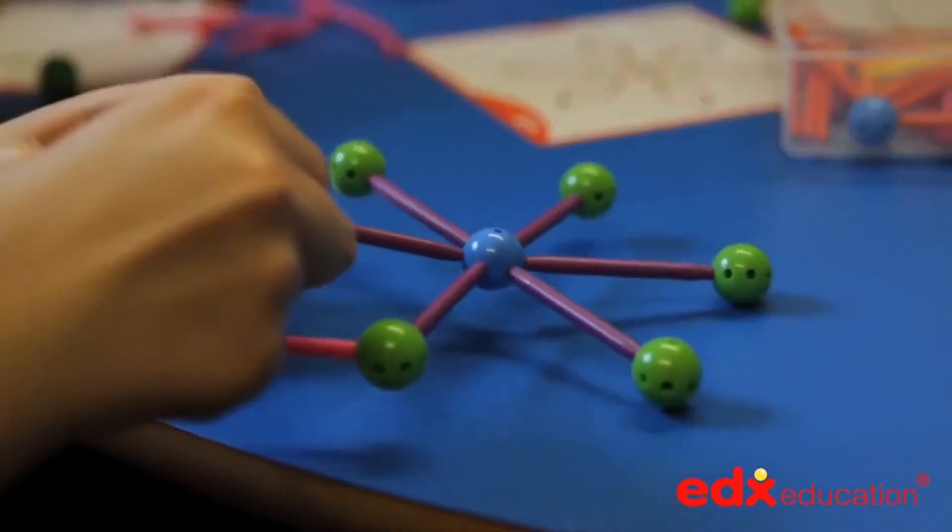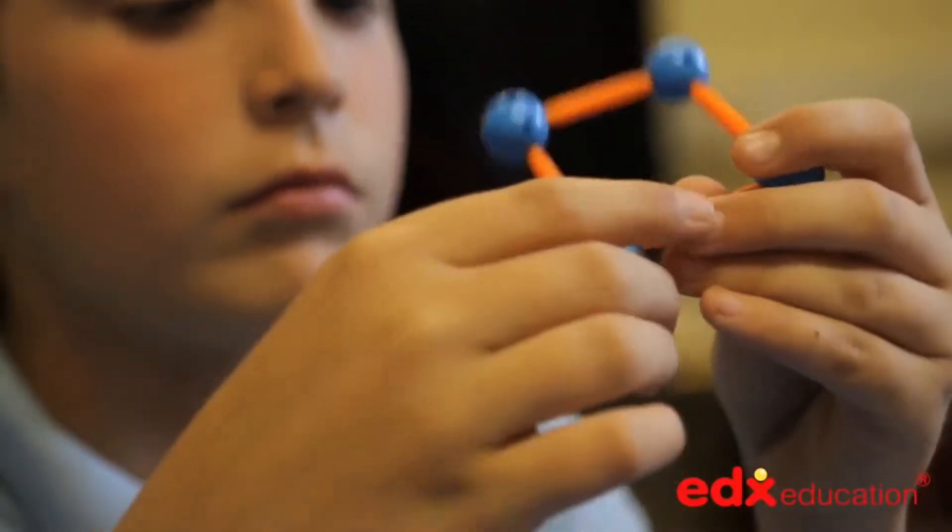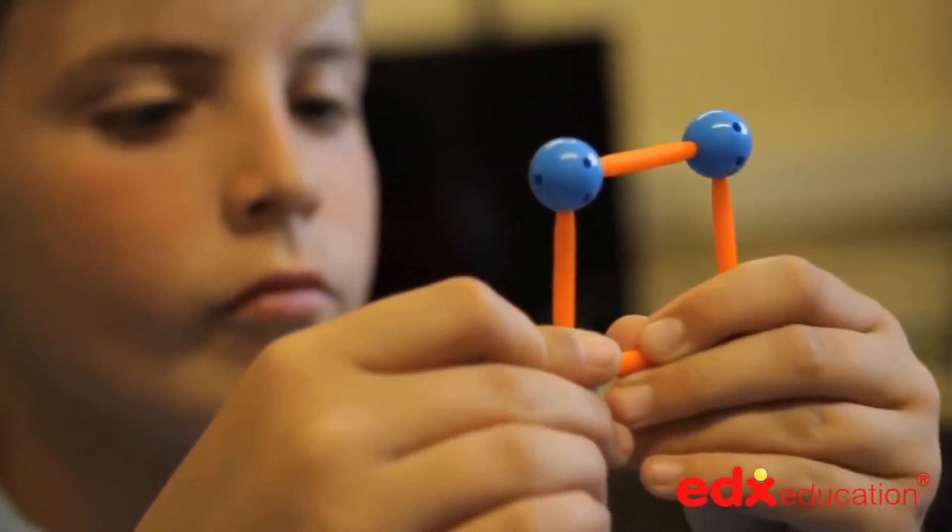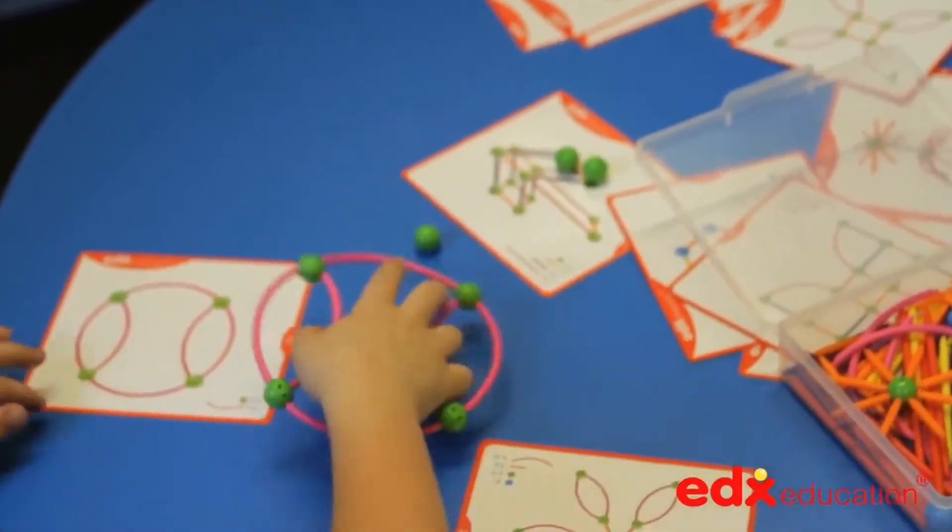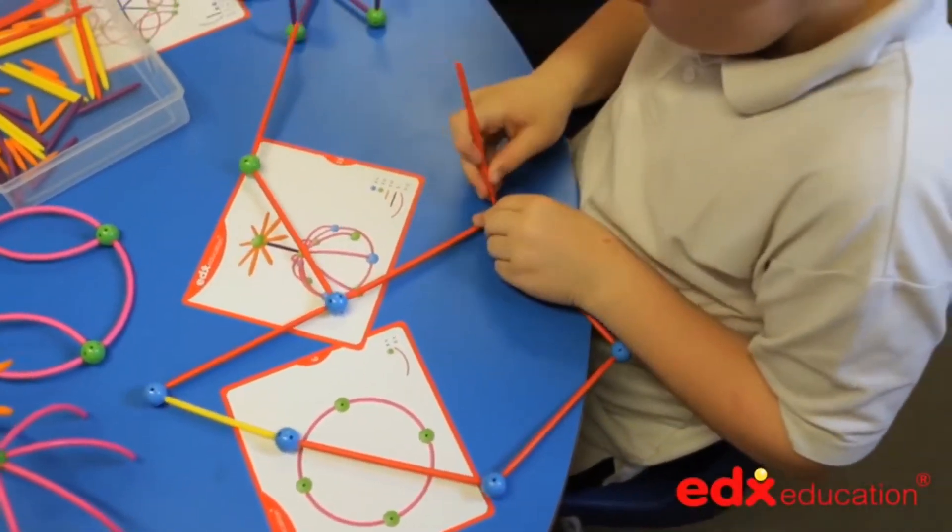The green balls have eight holes around their equator, and the blue balls have six, giving a variety of angles. The children will be able to build regular and irregular two-dimensional shapes whilst increasing and cementing their mathematical vocabulary.